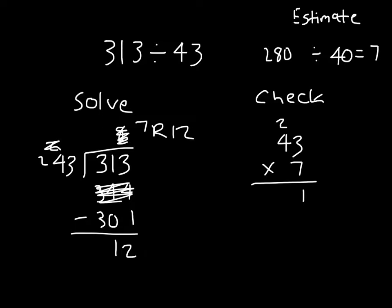4 times 7 is 28, plus 2 is 30. And then add back in the remainder. 313. So our solution is valid, where it is that we had 7 with a remainder of 12.